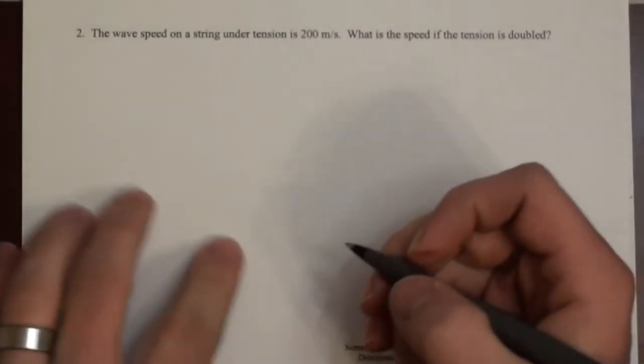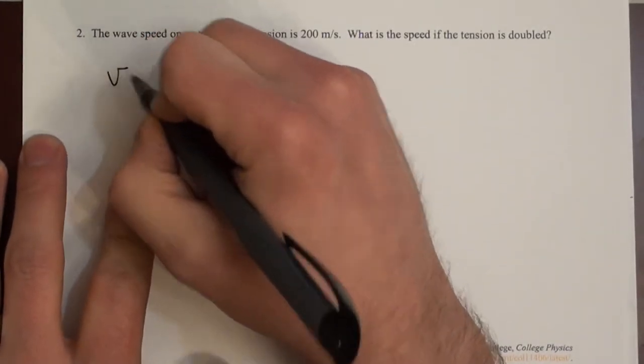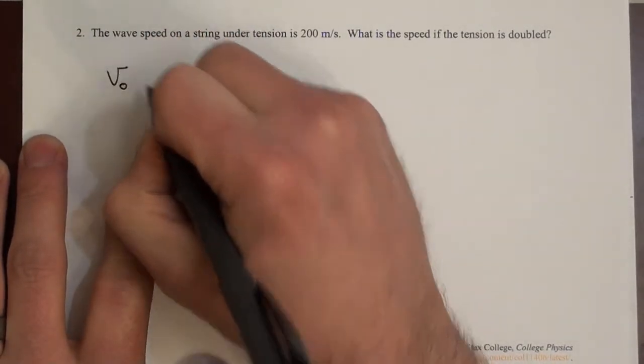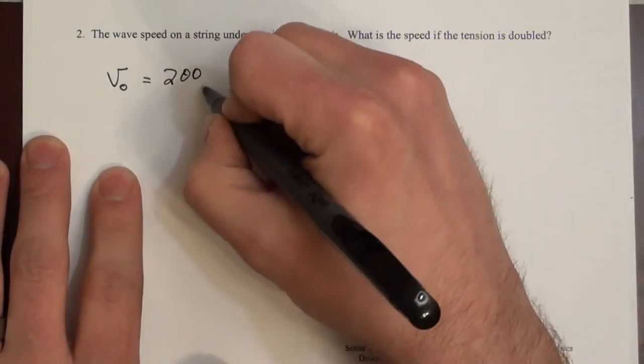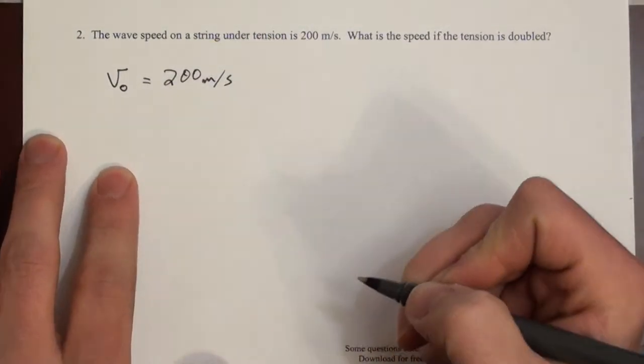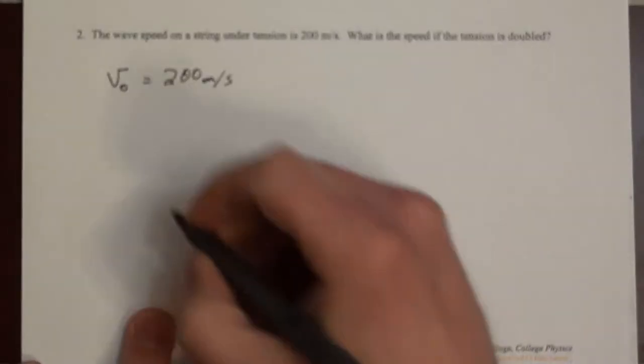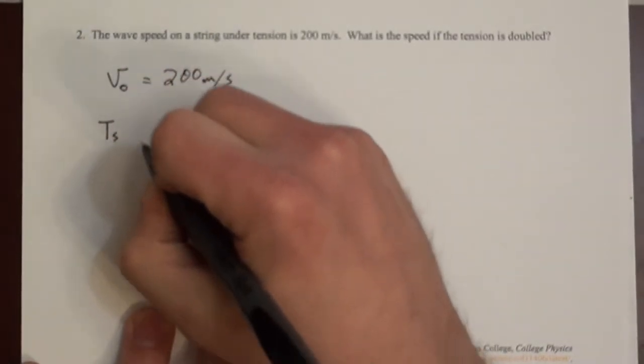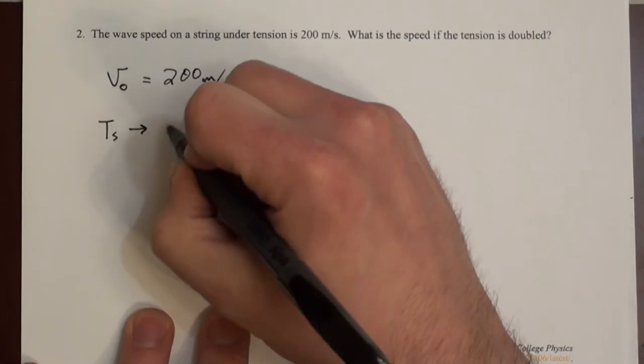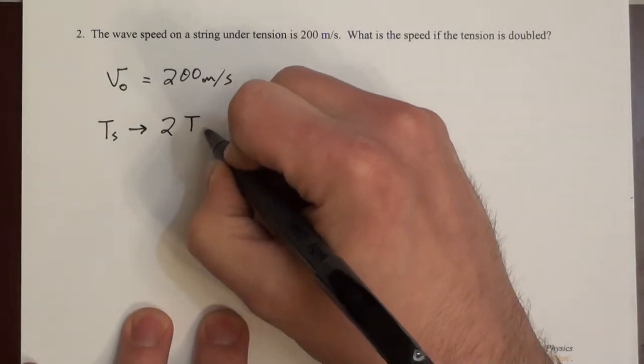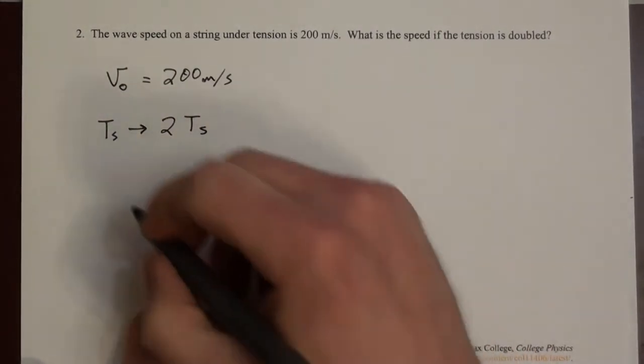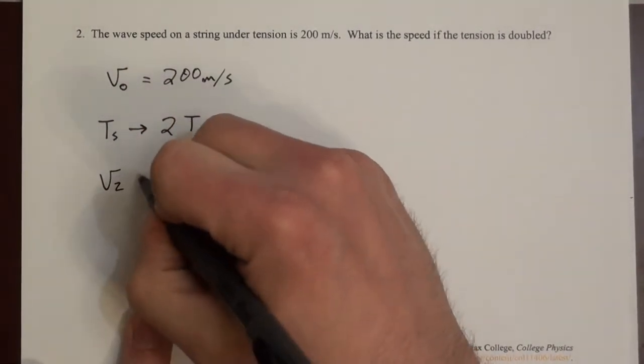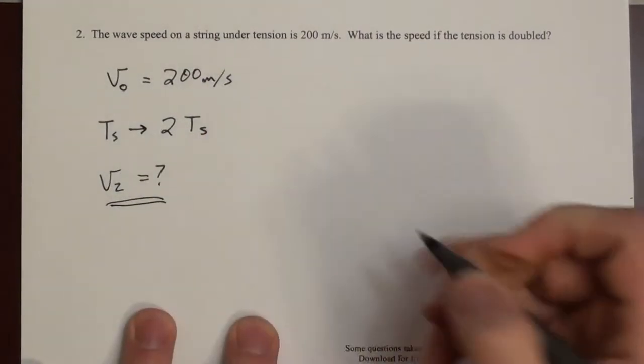So again, what we're given here is that the original velocity, so we'll call it v0, is 200 m/s. And we want to know if the tension in the string, so Ts, is doubled—so Ts becomes 2Ts—what does the velocity become? So let's call it v2. That's the question.